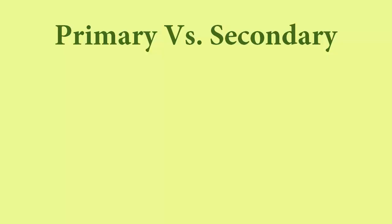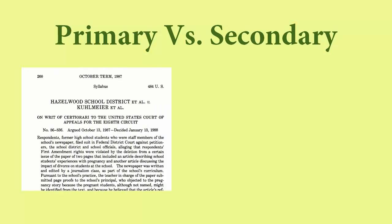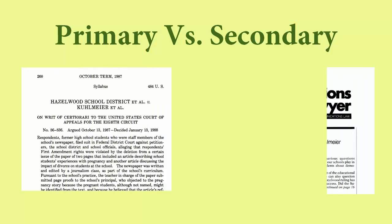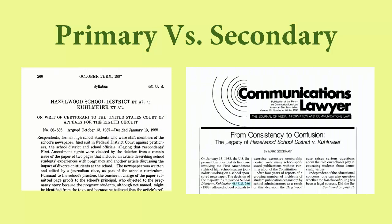Primary sources can be used to gather direct information about a topic. Secondary sources can be used to get context, summary, or analysis.